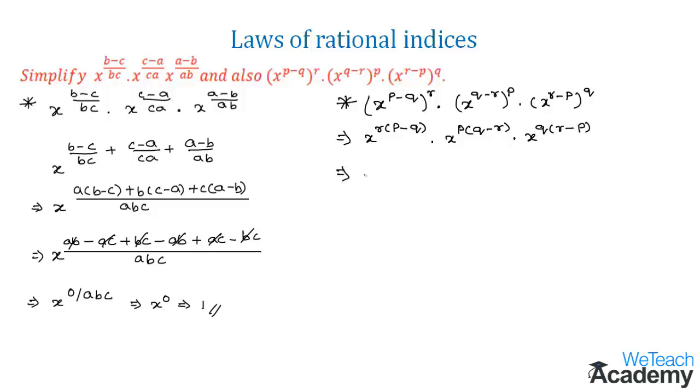Now let us multiply the power r with the group p minus q. So this would be here x power rp minus rq into x power pq minus rp into x power qr minus pq.